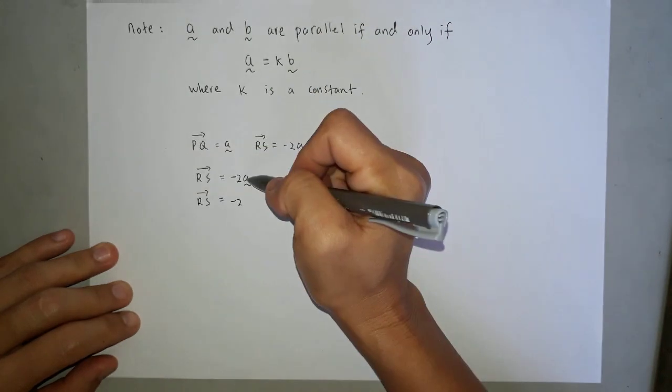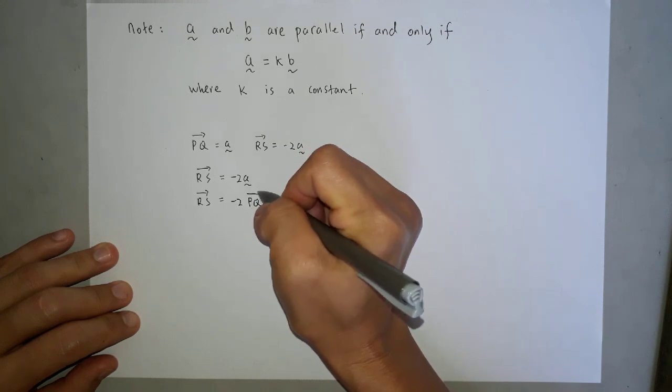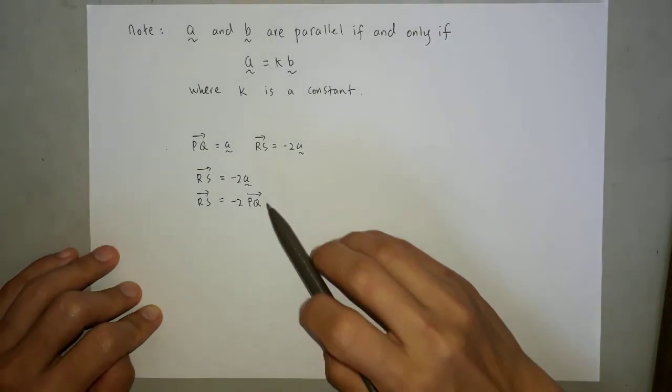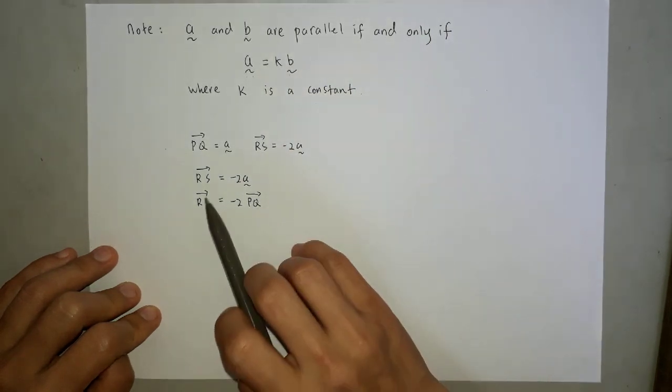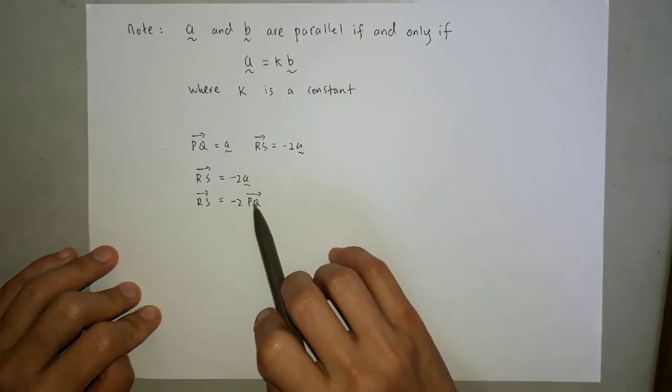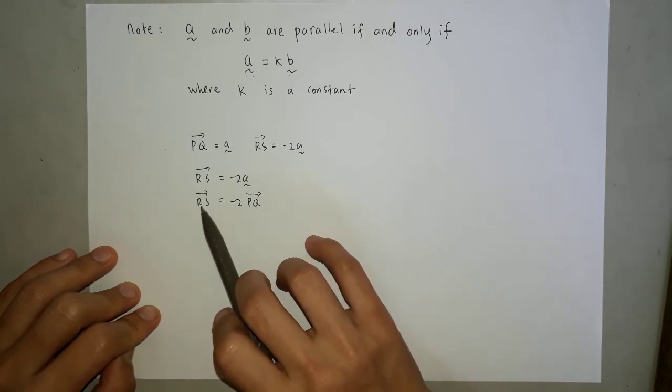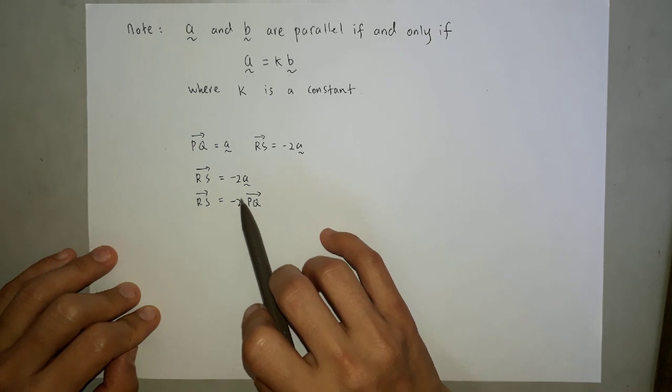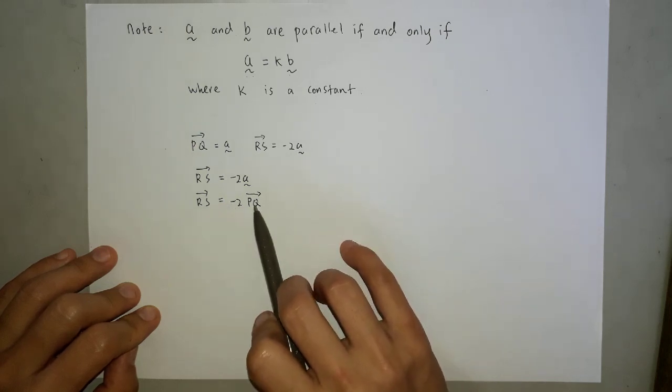Vector A. So I replace this one with BQ. BQ. Compare these two. As long as we can write two vectors equal to vector with a constant, we already show these two vectors are parallel.